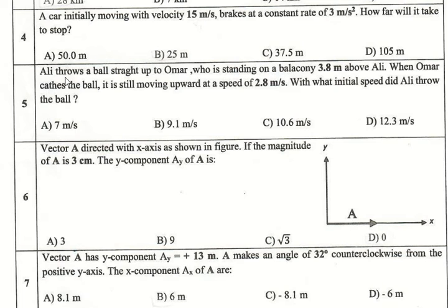Problem 5. Ali throws a ball straight up to Omar, who is standing on a balcony 3.8 meters above Ali. Ali launches the ball upward, and Omar is above Ali by a distance of 3.8 meters. This is Omar's height relative to Ali.